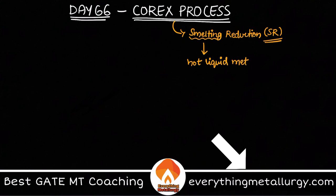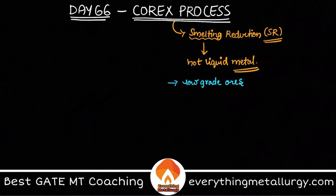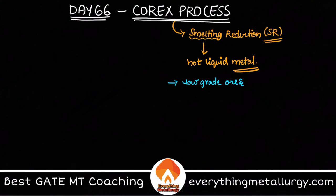The output that you get is similar to what we get in the blast furnace, which is the hot liquid metal, or hot metal as we call it. Here we use low-grade iron ores — or any kind of ores can be used, but preferably low-grade ores — which are not acceptable in traditional blast furnace iron making due to physical or chemical reasons.